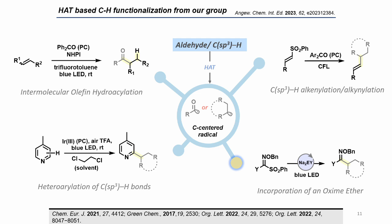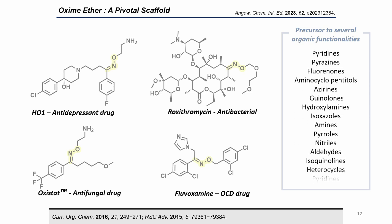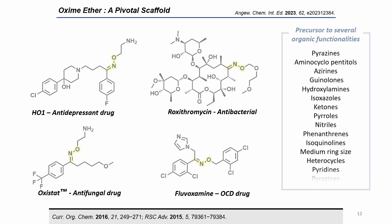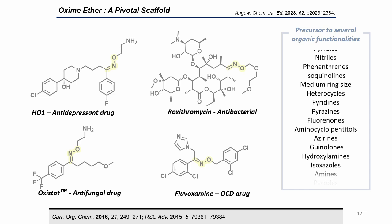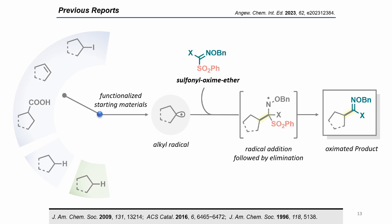The traditional approach for oxime group synthesis is via Beckmann-type reactions or nitro reduction, which require pre-installed functional groups. Therefore, the direct installation of an oxime ether functional group is very important, as these appear as privileged scaffolds in various drug molecules like clarithromycin, roxithromycin, oxysterols, fluvoxamine, and others. Furthermore, an oxime ether group is also a precursor to several organic functionalities like amines, aldehydes, indoles, pyridines, pyrroles, and nitriles.